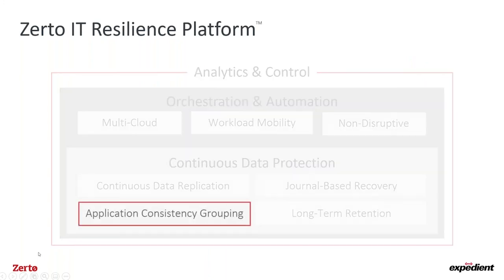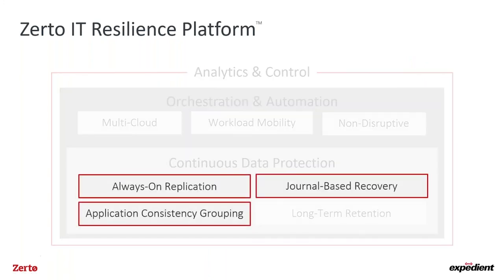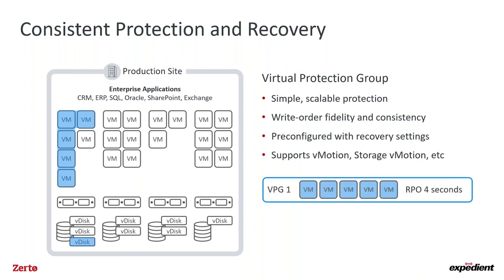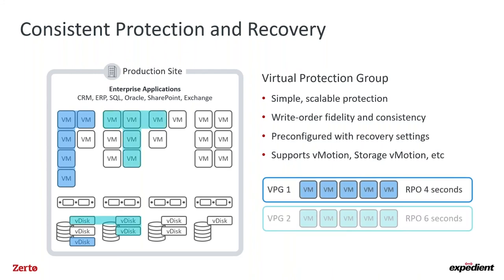Now let's focus on key elements within Continuous Data Protection — specifically application consistency grouping. Applications don't consist of a single VM anymore; they're multiple VMs, potentially with different database servers from different vendors. We have a concept called Virtual Protection Groups, or VPGs, which allow you to group the VMs that make up an application or application chain.